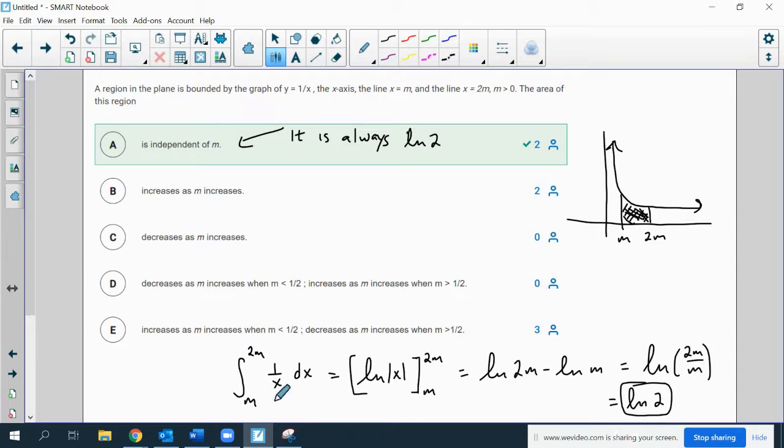So we take the integral, the integral is the natural log, and we plug in 2m and m. One of the properties of logs is that if you have two logs of the same base, natural log has the same base obviously, if you subtract them, then that's the same thing as the log of that base. This would be the numerator and this would be the denominator. You're allowed to divide the interiors of the logs, so 2m over m is 2, and the natural log of 2 is a constant. Since it's constant, that means that the area of the region is not dependent on m.